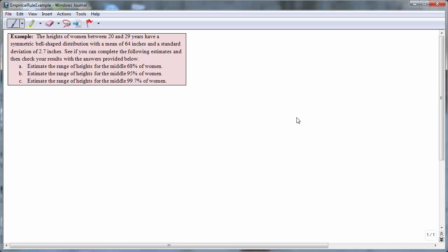In this video, we learn how to apply the 68, 95, 99.7 rule. For example, the heights of women between the ages of 20 and 29 have a symmetric bell-shaped distribution with a mean of 64 inches and a standard deviation of 2.7 inches.